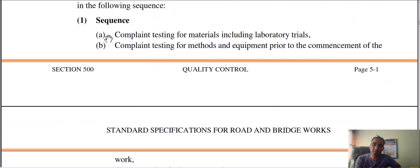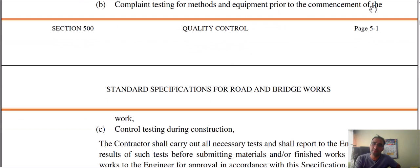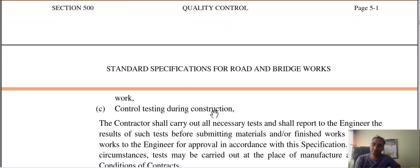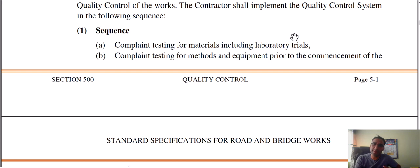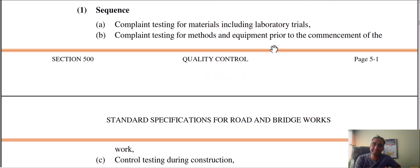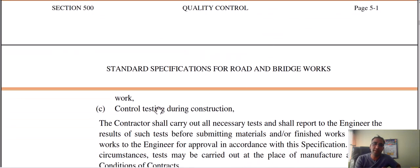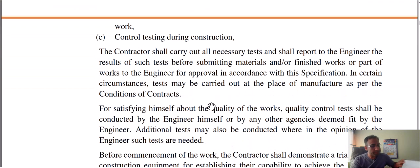The quality control system follows a sequence. In this sequence, we have compliance testing for materials including laboratory trials. The material must be spec-compliant for laboratory trials, and the method and equipment must be compliant for testing — prior to the commencement of the work. Then there is control testing during construction. The contractor shall carry out all necessary tests and shall report to the engineer the results of such tests before submitting the material and/or finished work to the engineer for approval in accordance with the specification.